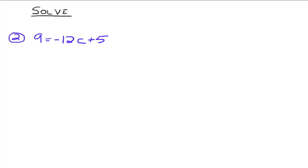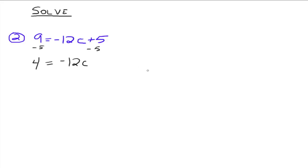Number 2: 9 equals negative 12c plus 5. Again, the goal is to isolate the variable — in this case the variable c. Everything that's got a c goes to one side, everything that doesn't have a c to the other side. There's only one term that has a c; this 5 and this 9 do not. So we're going to subtract 5 from both sides. If you need to put that line in where you explicitly write out the minus 5, by all means please do so.